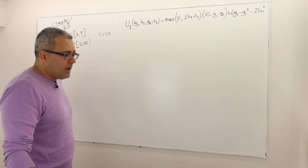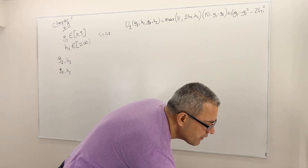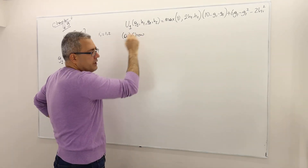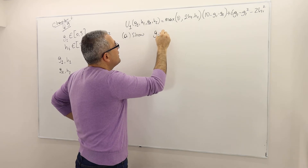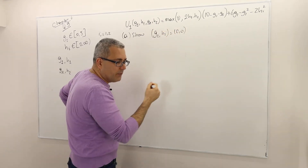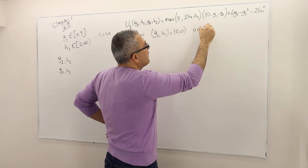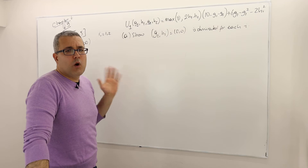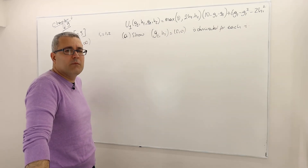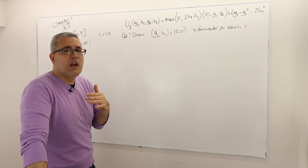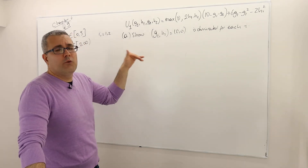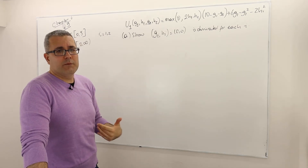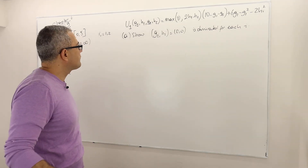This is a symmetric game. The first question asks us to show that the strategy (g_i, h_i) = (0, 0) is a dominated strategy for each player i. I'm going to do this for player 1 only. Because the game is symmetric, the same conclusion will hold for player 2 — but as an exercise, you should verify player 2's analysis at home to validate that the conclusion is the same.